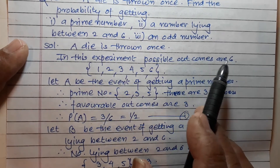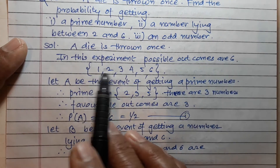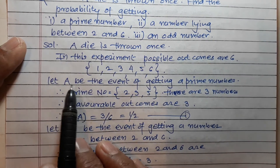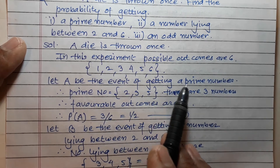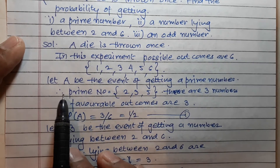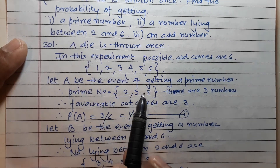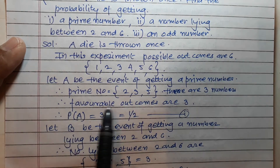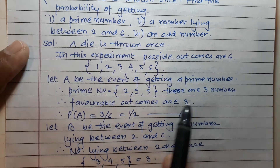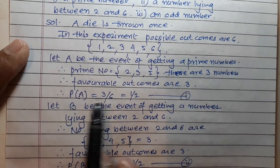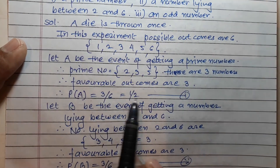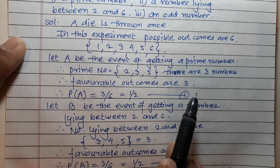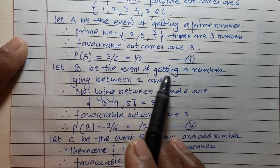Solution: a die is thrown once. In this experiment possible outcomes are six: one, two, three, four, five, six. Let A be the event of getting a prime number. Prime numbers are two, three, five, so there are three numbers. Favorable outcomes are three, and P(A) is equal to three upon six, that is one upon two. Answer number one.